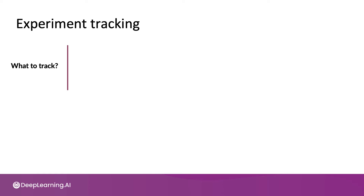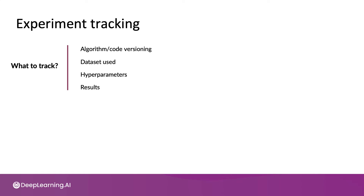When you're tracking the experiments you've run — meaning the models you've trained — here are some things to track. One is to keep track of what algorithm you're using and what version of code. Keeping a record of this will make it much easier for you to go back and replicate an experiment you had run maybe two weeks ago and whose details you may not fully remember anymore. Second, keep track of the dataset you use. Third, hyperparameters. And fourth, save the results somewhere. This should include at least the high-level metrics such as accuracy or F1 score, but if possible, it'd be useful to just save a copy of the trained model.